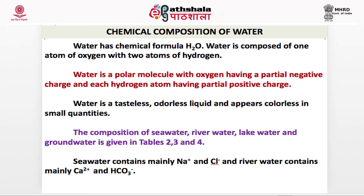Water has the chemical formula H₂O, composed of one atom of oxygen and two atoms of hydrogen. Water is a polar molecule with oxygen having a partial negative charge and each hydrogen atom having a partial positive charge. Water is a tasteless, odorless liquid appearing colorless in small quantities. Sea water contains mainly sodium ions and chloride ions, while river water contains mainly calcium ions and hydronium ions.